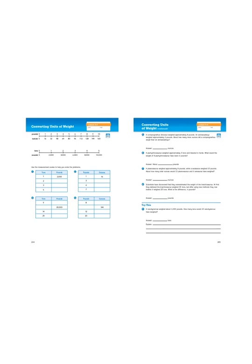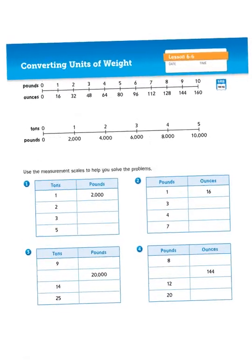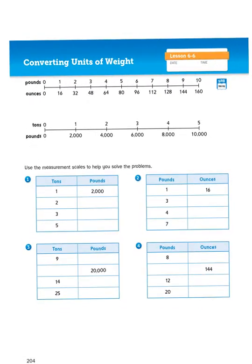We are in our math journals volume 2 on pages 204 and 205. Let's take a look at the top of page 204, and as you can see the units of weight that we're going to be converting between are the American style of ounces, pounds, and tons.